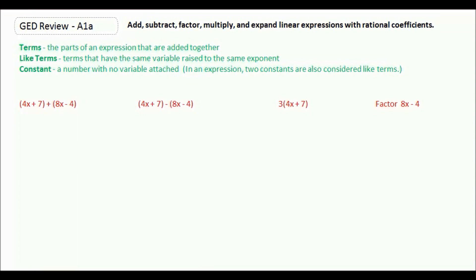First we need to deal with some definitions. Terms are the parts of an expression that are added together. Like terms are terms that have the same variable raised to the same exponent. For example, if I have 2x and 3x, those are like terms because they both have a variable of x and both x's are raised to the first power. Finally, a constant is a number with no variable attached, for example 4. In an expression, two constants are also considered like terms.